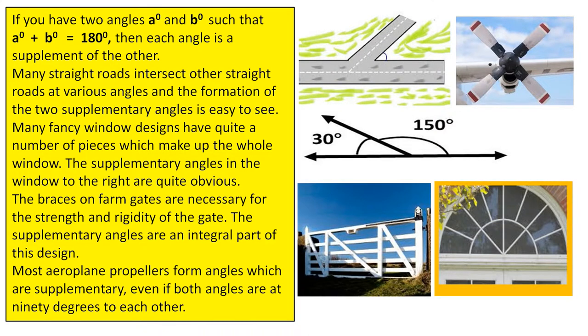If you have two angles A degrees and B degrees, such that A degrees plus B degrees equals 180 degrees, then each angle is a supplement of the other.